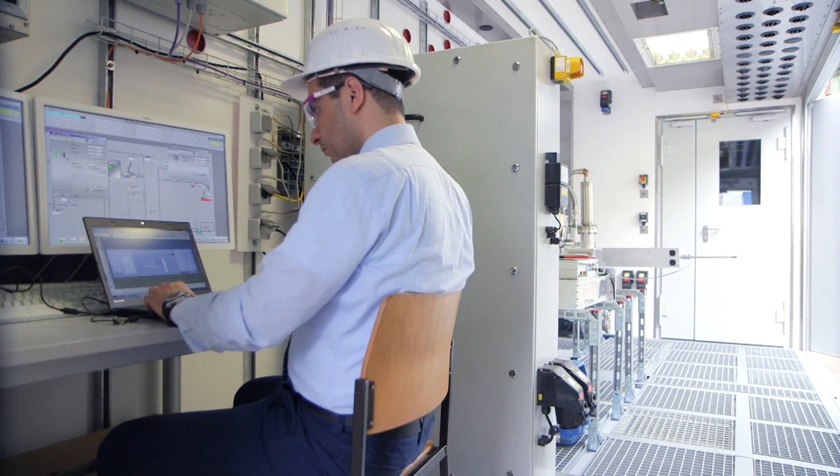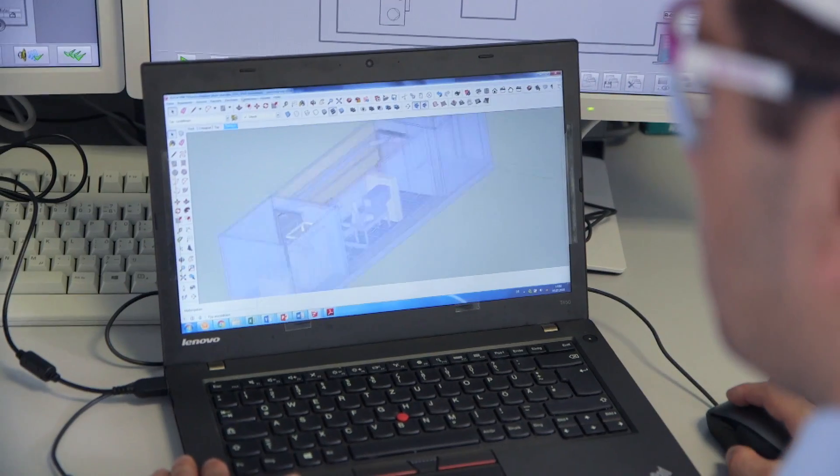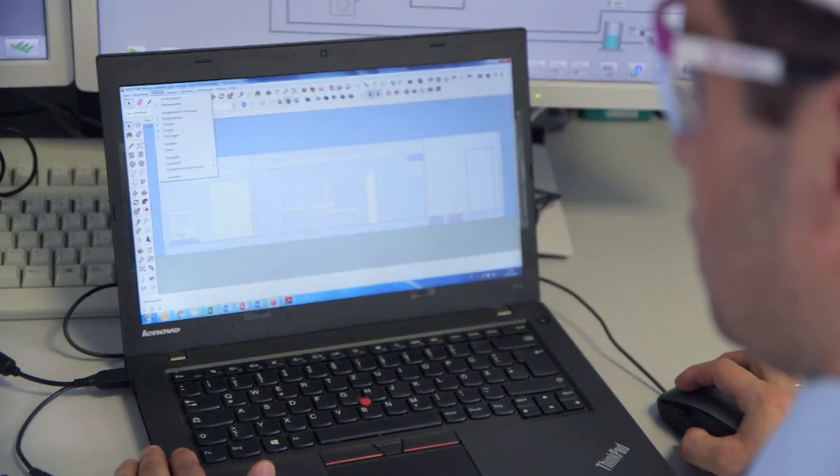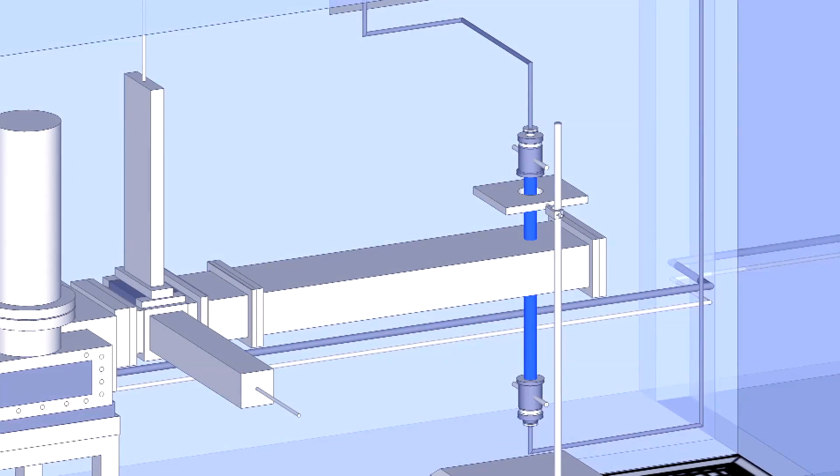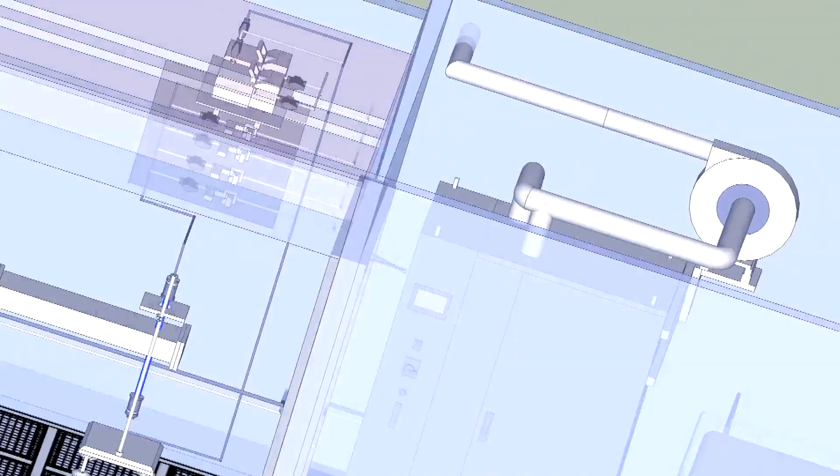Unlike complex pilot plants, the EcoTrainer is a modular plant to which various modules can be added to meet the need at hand. This allows scientists to test processes on a small, yet industrial scale, tailoring them to specific uses.